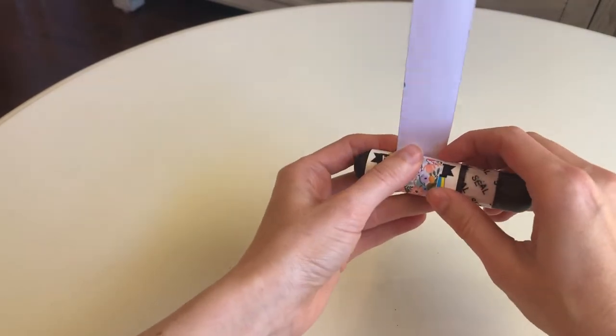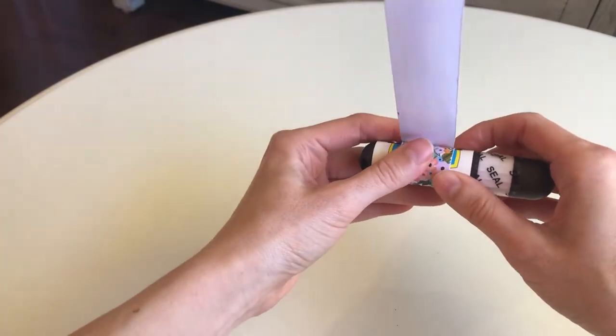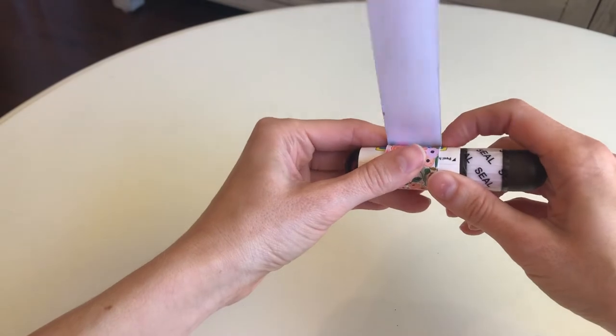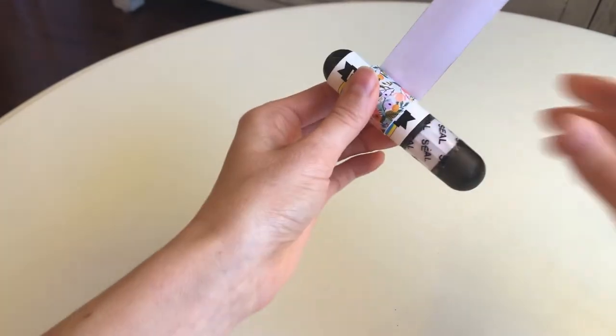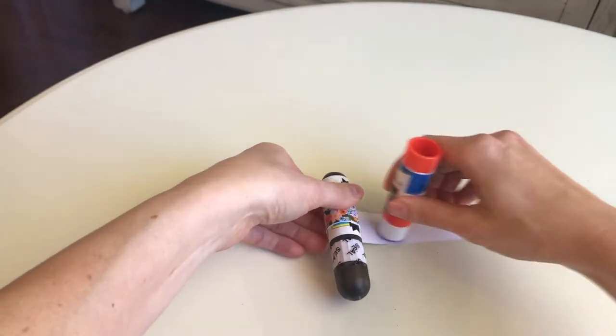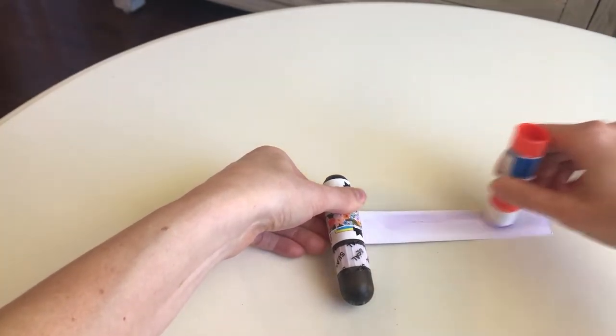So once you've applied your glue you're going to slowly and tightly wrap your patterned paper around. Also remember to add glue as you go along so it can be secure and sturdy.